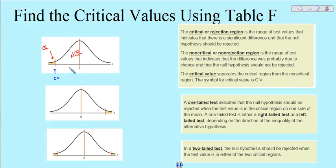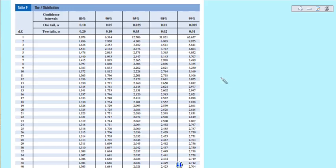We can do this for both a left-tailed, a right-tailed, and we also can do it for a two-tailed test. When we do this, we'll use Table F, and so we'll have a couple things we'll need to identify.